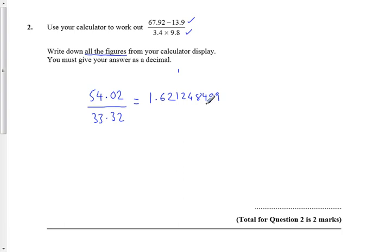And it does say write them all so give your answer as a decimal. So I'm just going to write the whole thing down in the answer box: 1.621248499. Now I'm done.